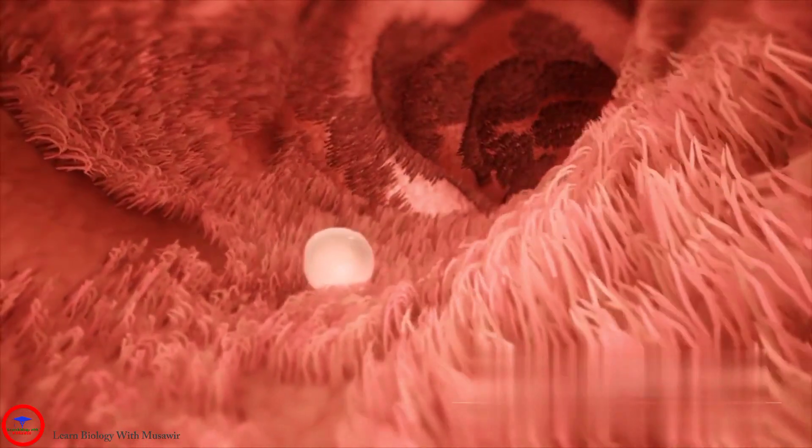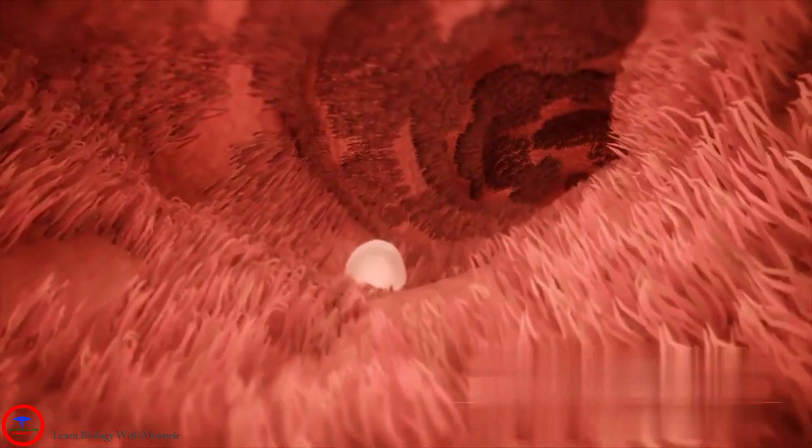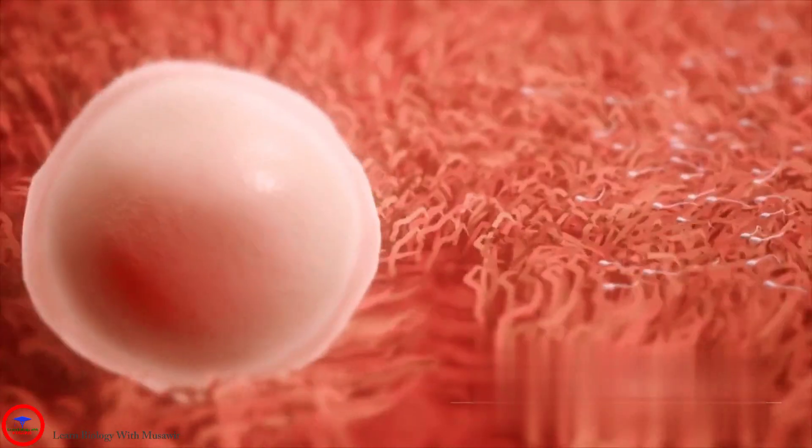The egg travels through the fallopian tube, propelled in part by contractions in the fallopian tube walls. Here in the fallopian tube, the egg may be fertilized by a sperm.